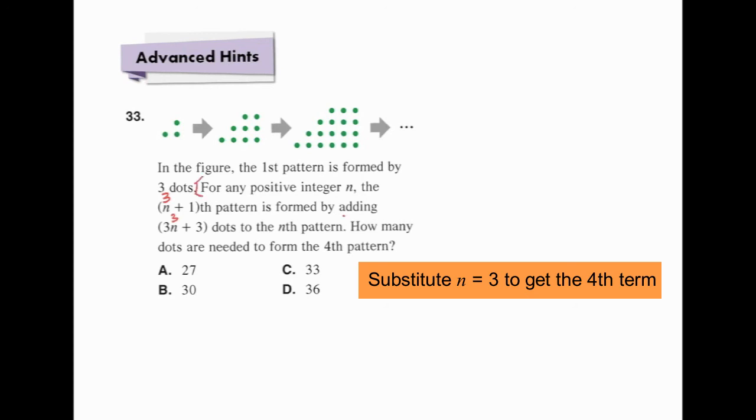By counting, the third pattern has 18 dots. We have 18 plus 3 times 3 plus 3. We have 18 plus 12. The answer is 30.